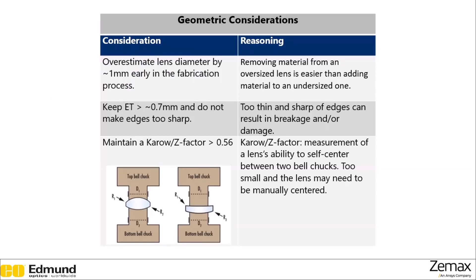A few important considerations: it's good to overestimate lens diameter by a millimeter or so early in the fabrication process. If you have a prototype and need to remove some material from an oversized lens to make it fit, that is much easier than adding material to an undersized lens. You should also keep the edge thickness above approximately 0.7 millimeters and not make the edges too sharp, as too thin or sharp edges can result in breakage or damage of the component.